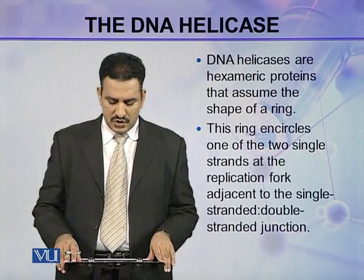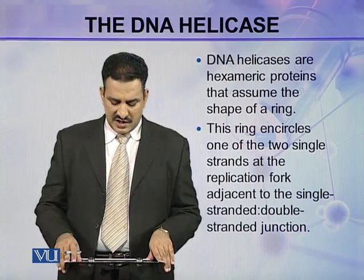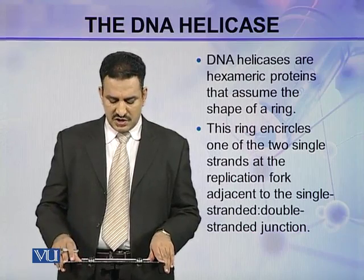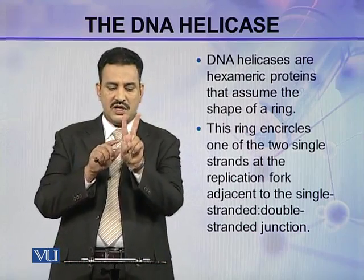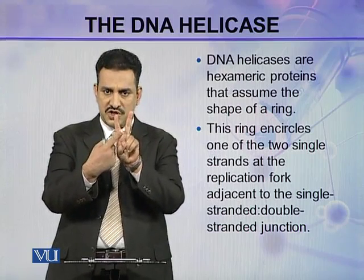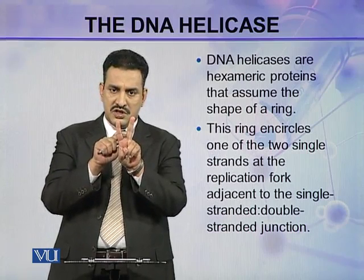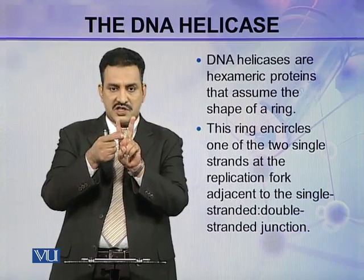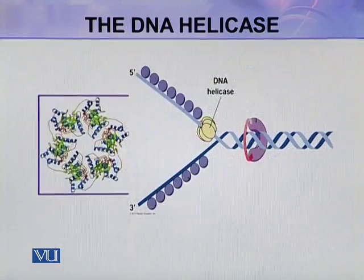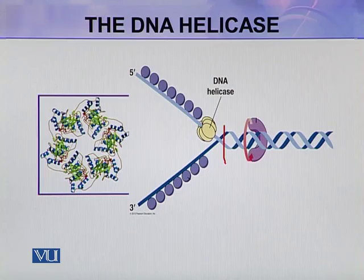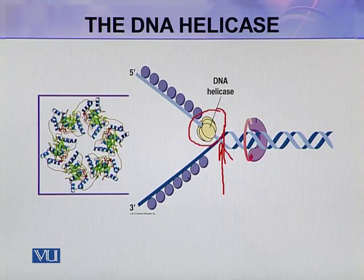This ring encircles one of the two single strands of DNA at the replication fork, adjacent to the single-stranded/double-stranded junction. Here in this diagram, you can see this is the replication fork, and adjacent to this single-stranded/double-stranded junction, this DNA helicase is present. This DNA helicase is only present on one of the two strands; it is not present on both strands.